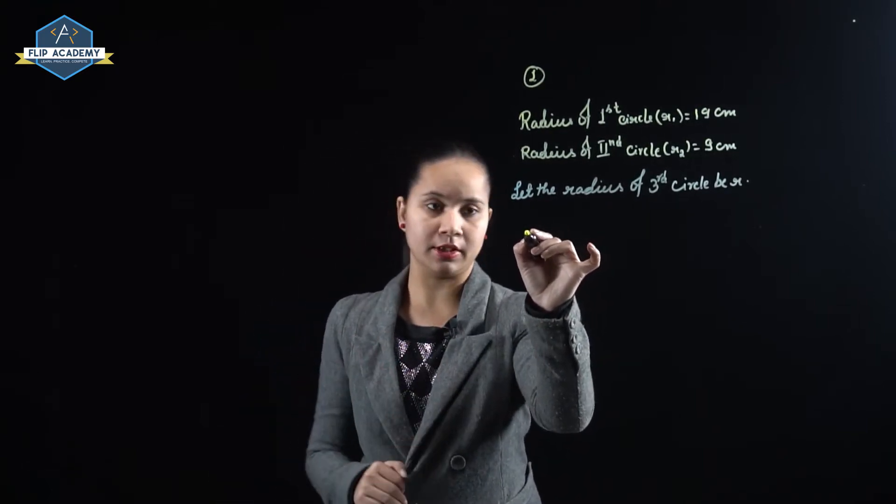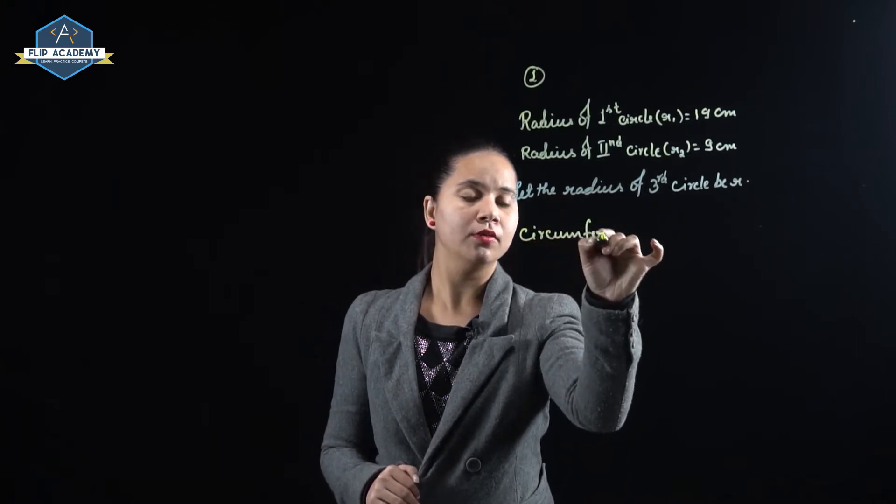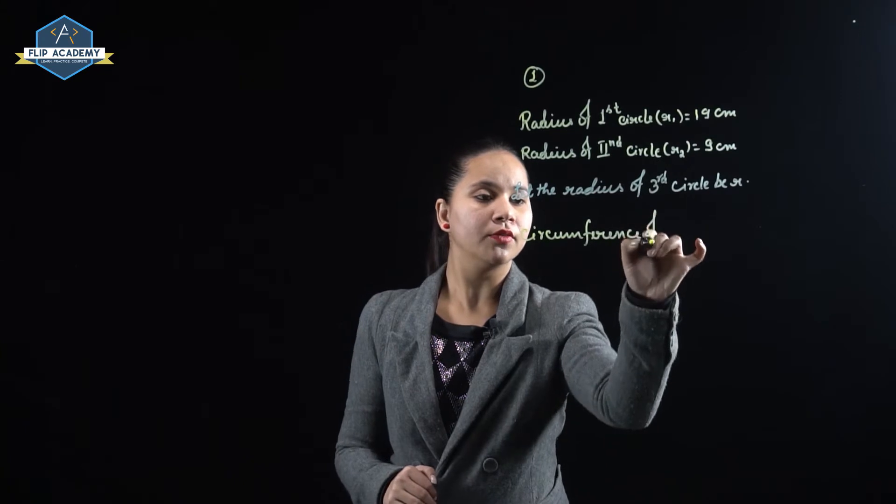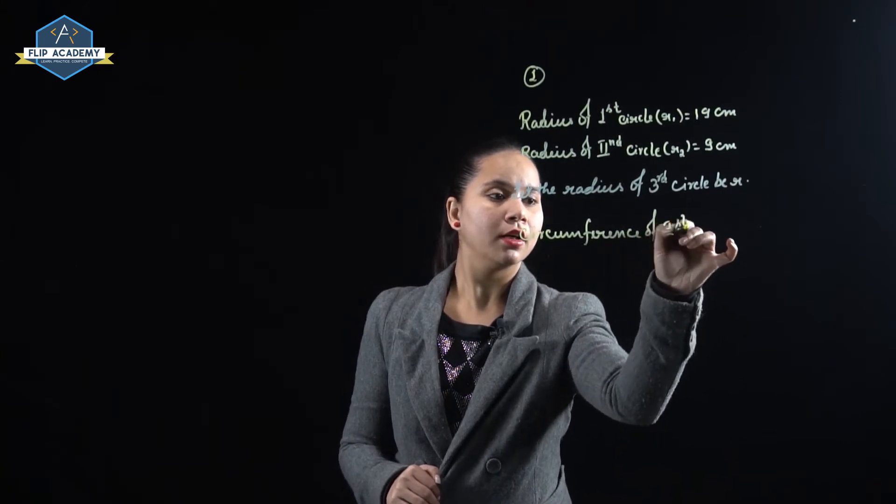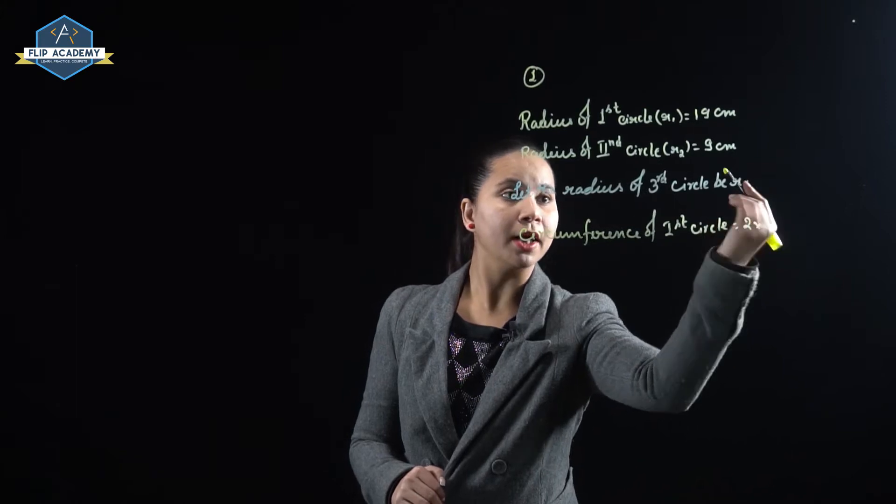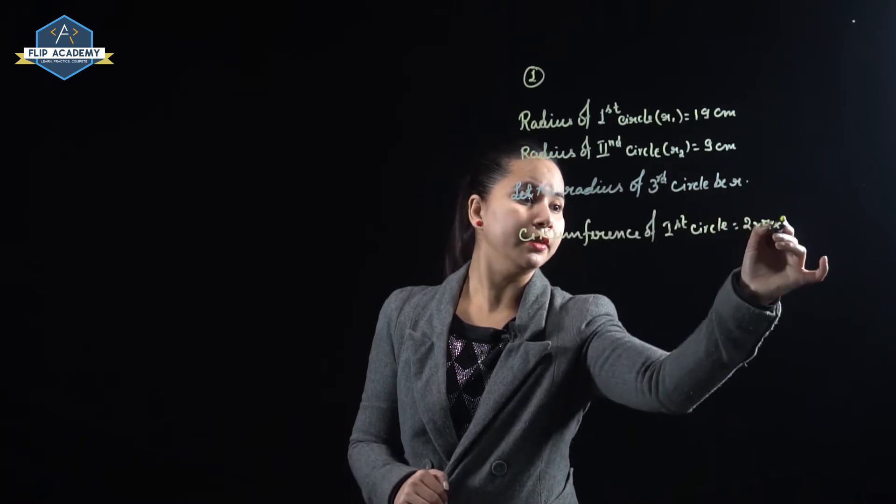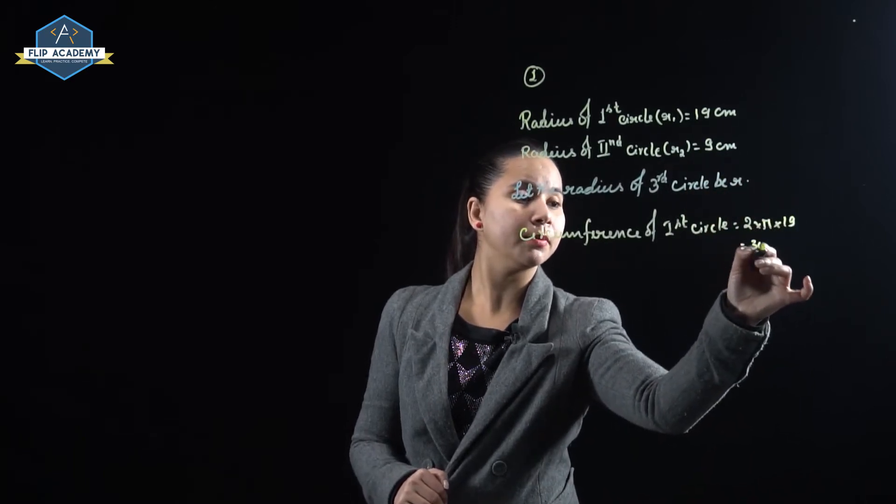First of all we will find circumference of the first circle. Circumference of circle is 2 pi r, 2 pi and r is r1 which is 19. So it is equal to 38 pi.